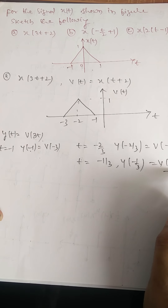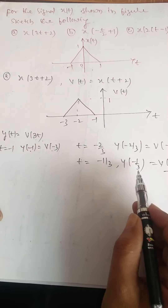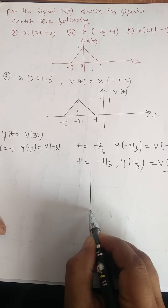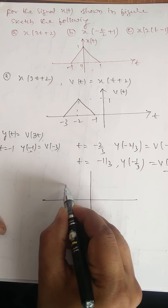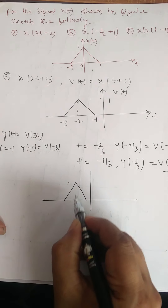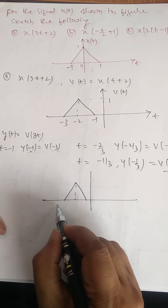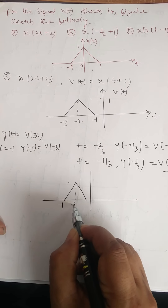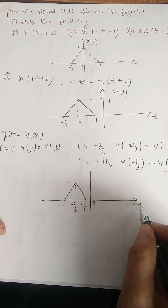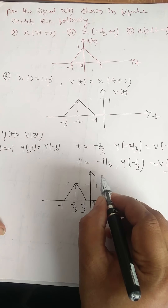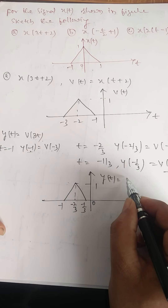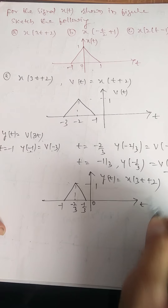So v of minus 1 to v of minus 3 is mapped from minus 1 by 3 to minus 1. The signal now exists from minus 1 to minus 1 by 3, with value 1. This is y of t, that is x of 3t plus 2.